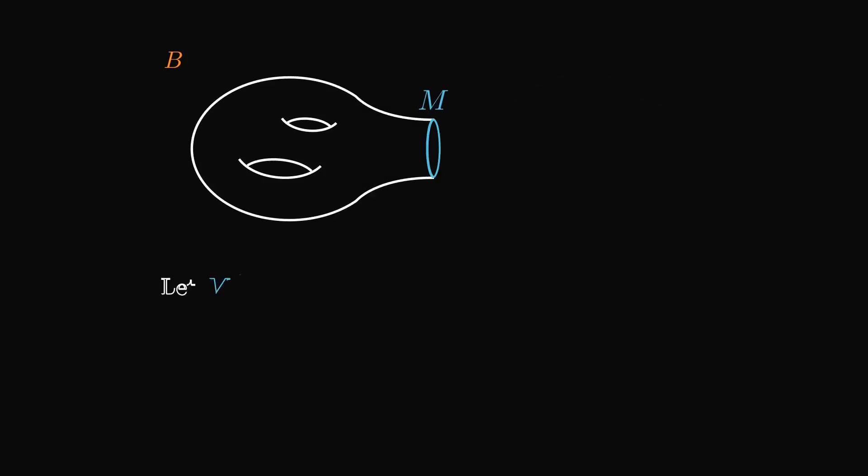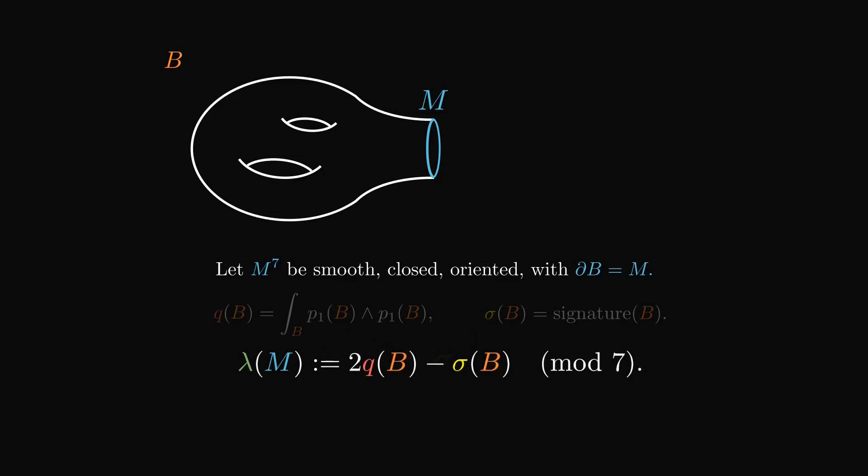Milnor then introduces a new invariant called lambda of M. For any bounding manifold B, define Q(B) as P₁ squared and sigma(B) as index signature. Lambda of M is double Q minus sigma, modulus 7.